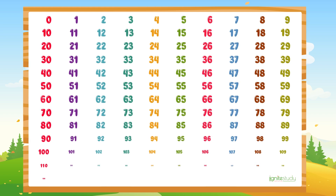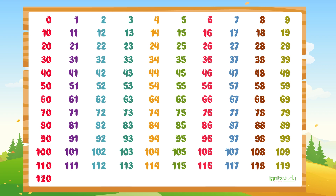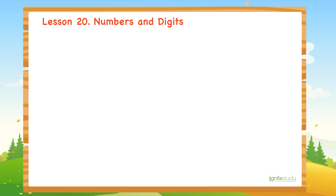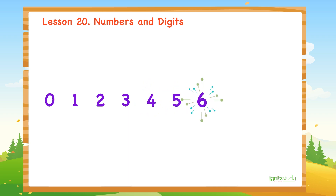We learned to count 0 to 120 in Lesson 18. Do you notice all of these numbers are formed by number symbols which are 0, 1, 2, 3, 4, 5, 6, 7, 8, 9.